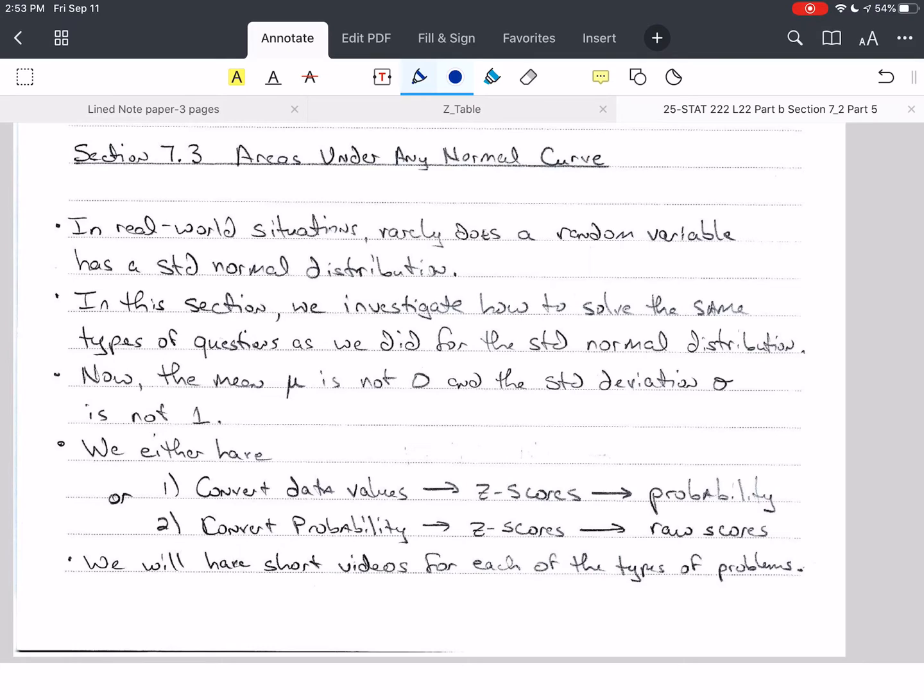So we're going to talk about the general or just the normal distribution. So it will have a mean of mu, which is usually not zero, and a standard deviation sigma, which is usually not one.